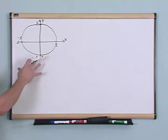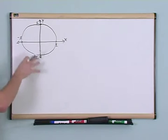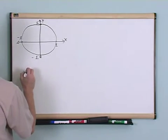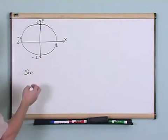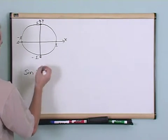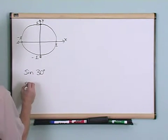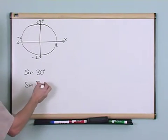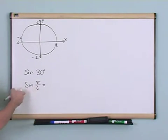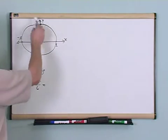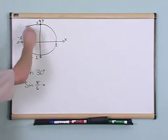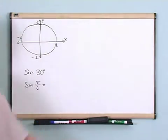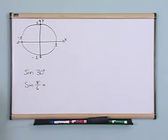You remember we used this quite extensively just not too long ago when we talked about how to take the sine of 30 degrees, or the sine of pi over 6 — pi over 6 is equal to 30 degrees. You use the unit circle to figure out where the angle is, and then by using that table we had written on the board, we can figure out what this stuff is equal to.